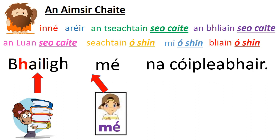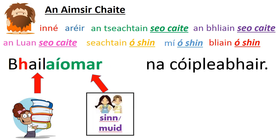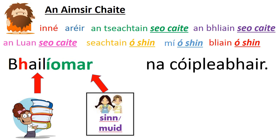Now look at this one: Bhailigh mé na cóipeanna — I collected the copies. Again, I have to get rid of the second syllable, away it goes, and now 'íomar'. Bhailíomar na cóipeanna. Now look at the vowels: there's a leathan vowel here. But look at the ending — that's a caol vowel. You can't have leathan and caol together — tá seo mícheart. So I get rid of that and use a new version of 'íomar' that will work, because it has a caol vowel here and a caol vowel here. Caol le caol — sin ceart go leor.